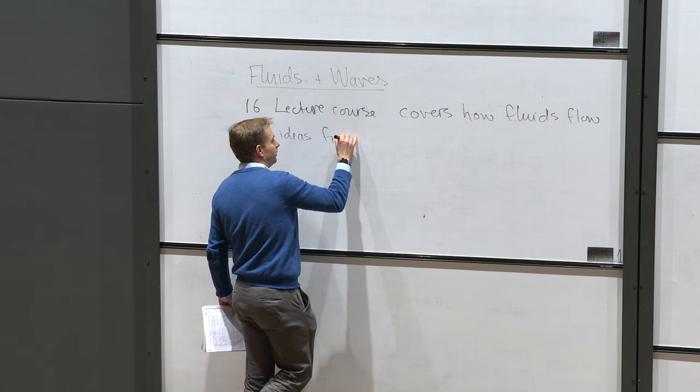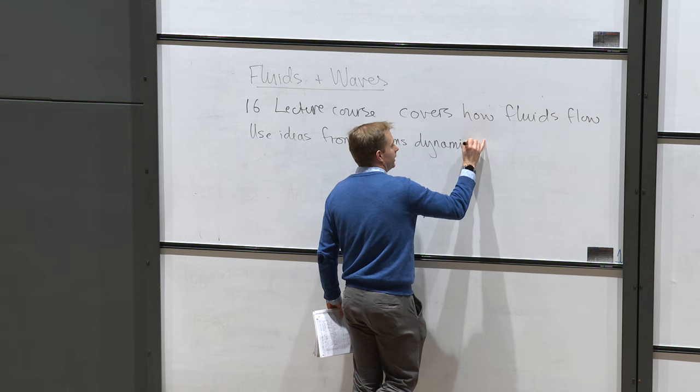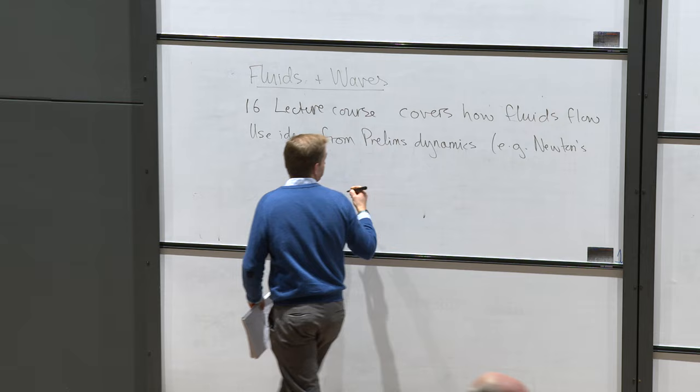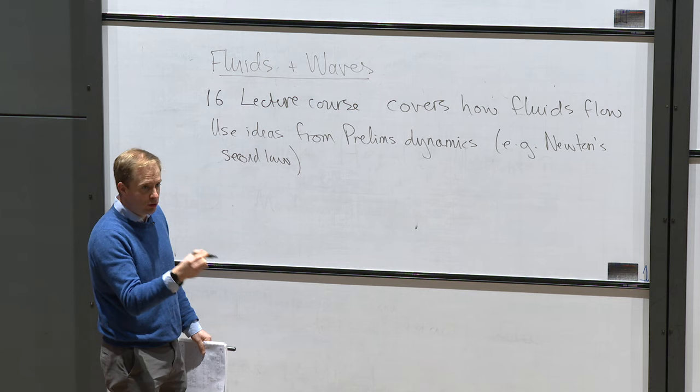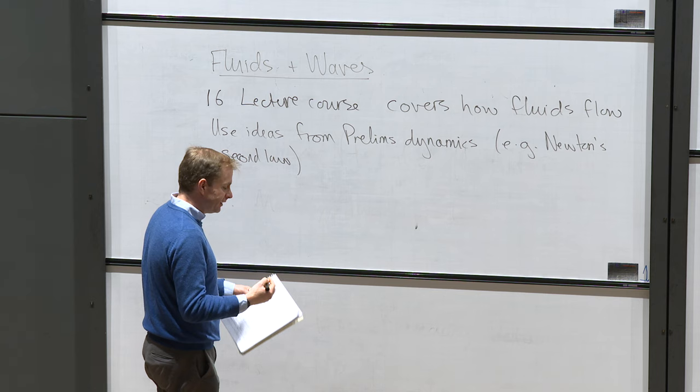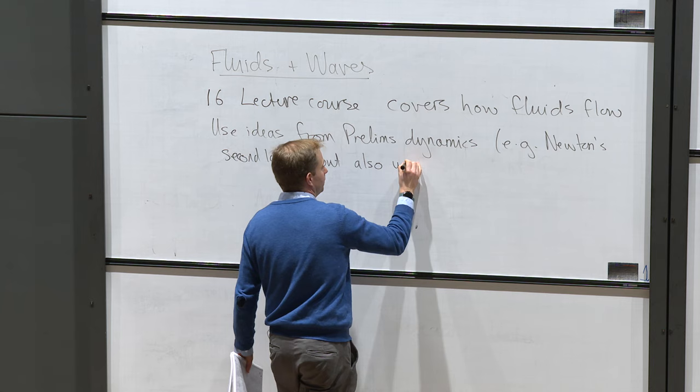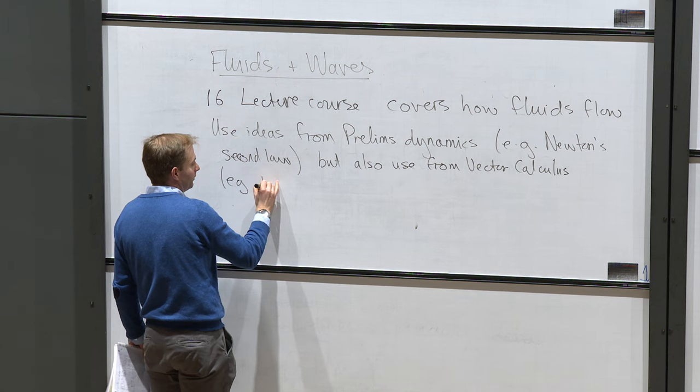We're going to use ideas from prelims dynamics — principally Newton's second law — but because we can't write Newton's second law for each individual particle, we want to do that for many particles. That involves writing down a vector field, so we'll also be using ideas from vector calculus, which are ideas you've seen in prelims multivariable calculus.